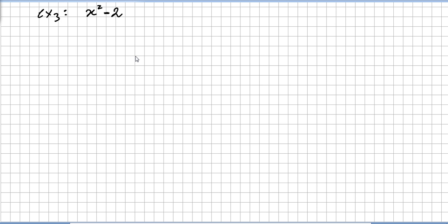We are still on the section of factorization of polynomials over integral domains. We have a third example, x squared minus 2, and we are going to check if it is reducible or irreducible over the rationals, and if it is reducible or irreducible over the real numbers.